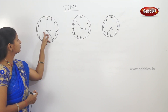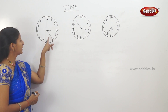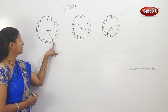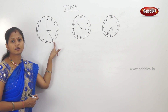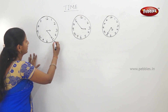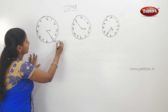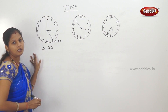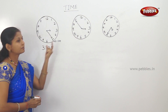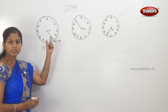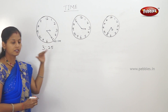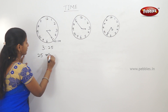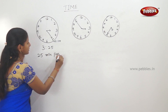So, short hand is 3. Long hand is 5. So how many hours are here? 3 hours. 5 minutes is 25. Ok? 3 hours is 25 minutes. 3 hours is 25 minutes.